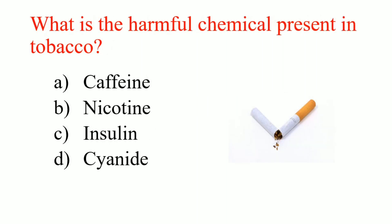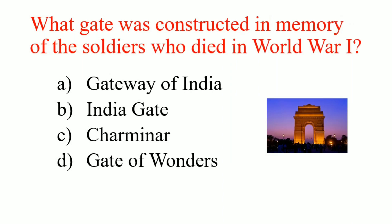What is the harmful chemical present in tobacco? Answer: Nicotine. What gate was constructed in memory of the soldiers who died in World War I? Answer: India Gate.